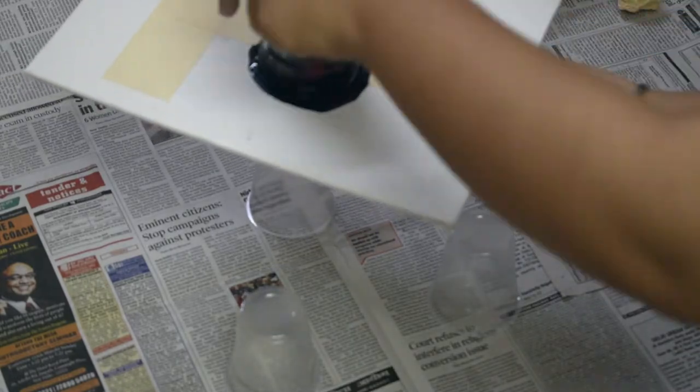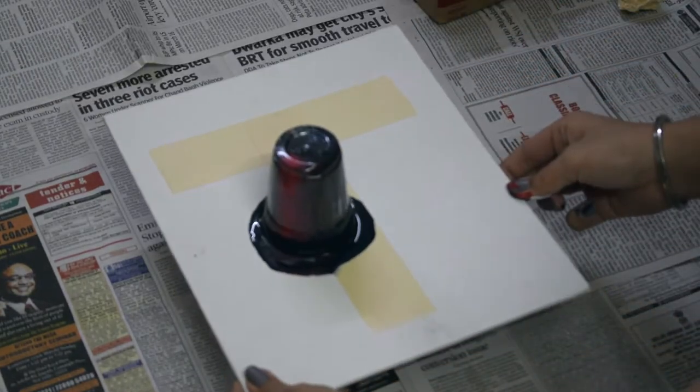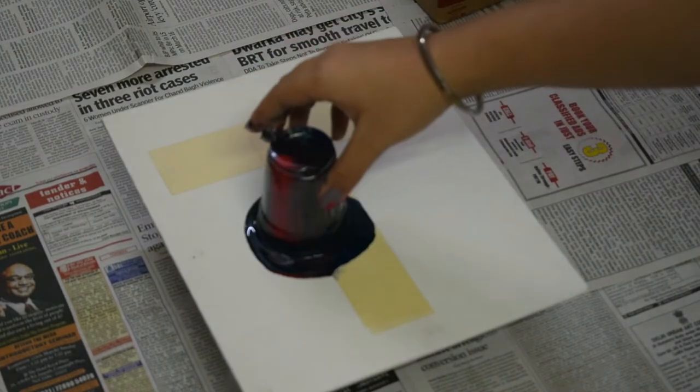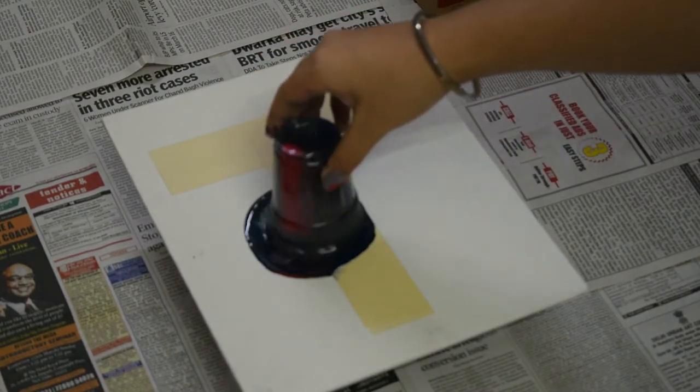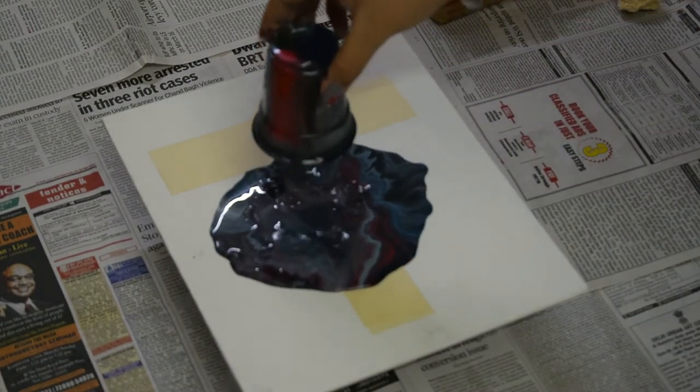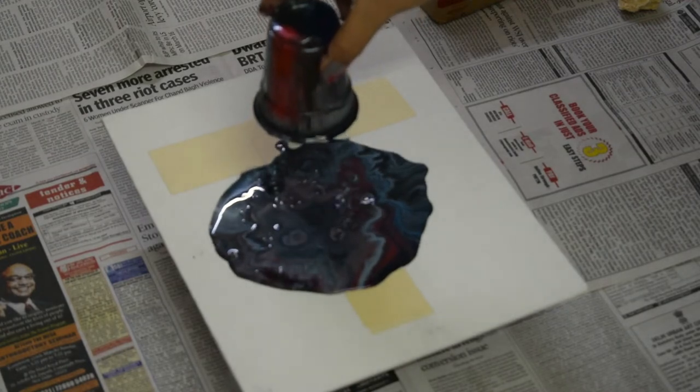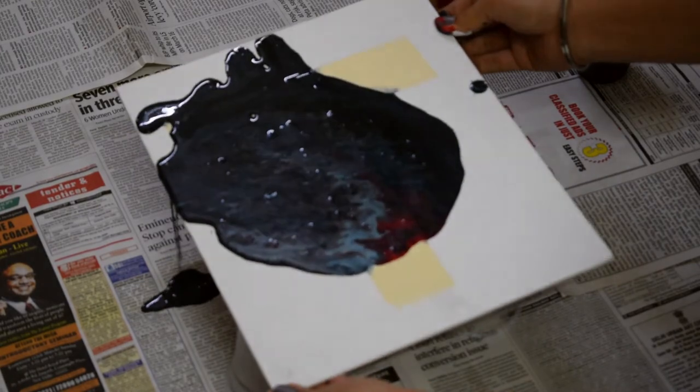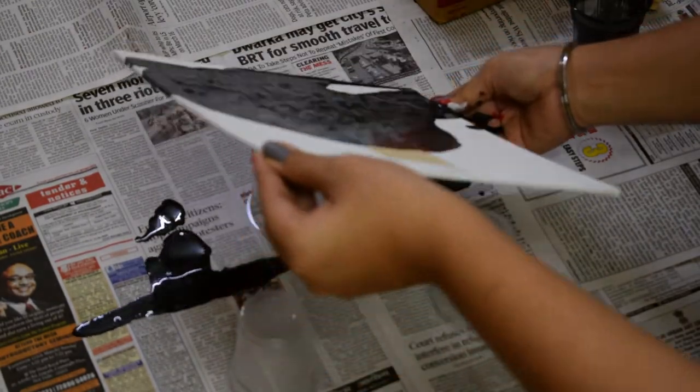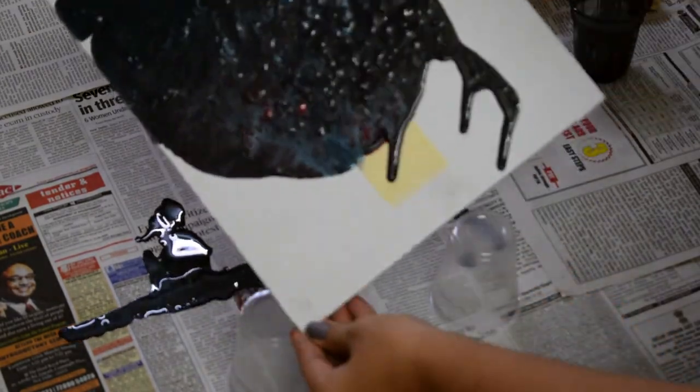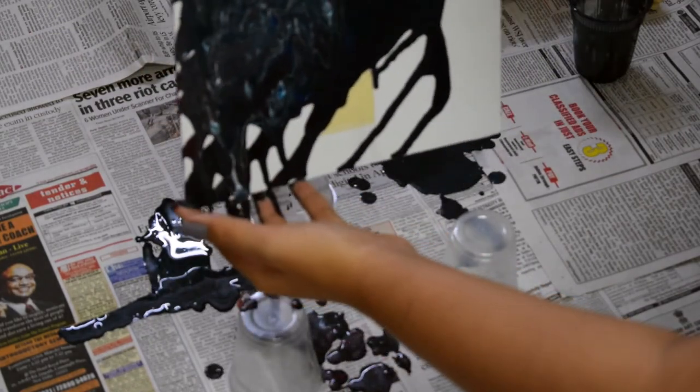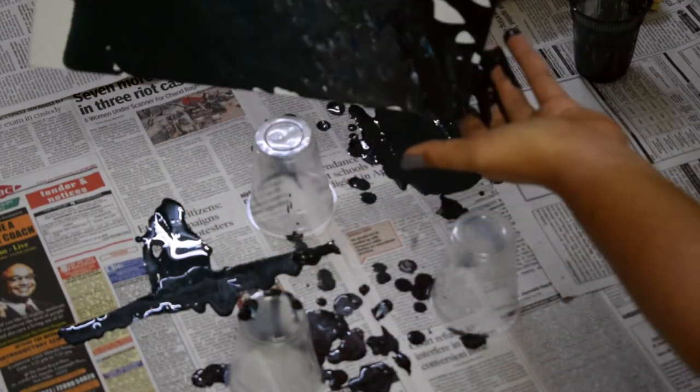Flip the glass very carefully and tap at the bottom so that all the colors come out. And look at that, it looks so beautiful already! But there's something more you have to do: you have to flip your board left and right, up and down, as fast as you can so that you can get this beautiful, amazing texture, marble-looking sort of finish on your painting.